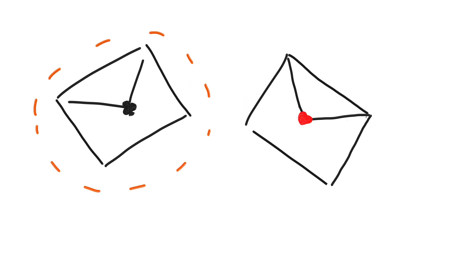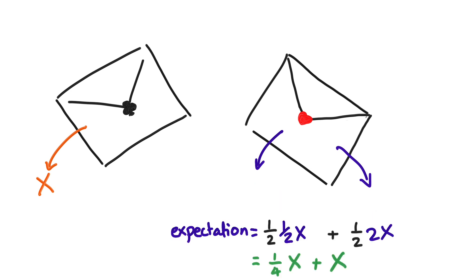Now remember the fallacy went like this. My envelope has some unknown amount x, but the other envelope has either 2x or half x, each with an equal probability. So in expectation, the other envelope has x plus a quarter x in it, which is more than x, and so I should swap.